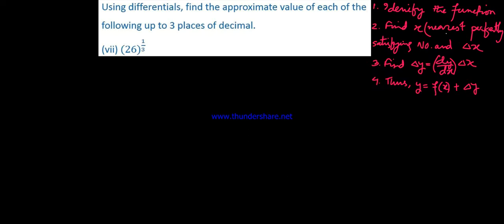The rule is to identify the function. Let the function be f(x). The function is defined by y equals x to the power of 1 by 3. So the function is x to the power one by three.